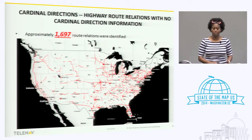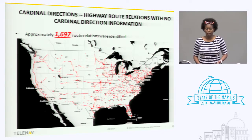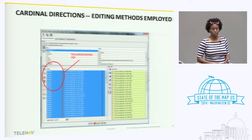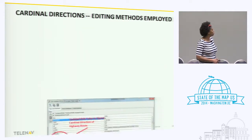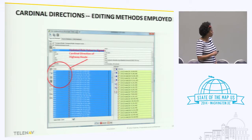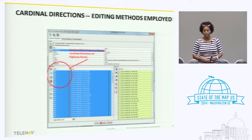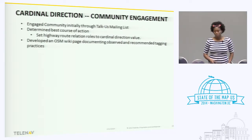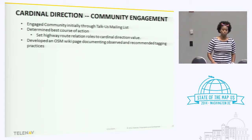We realized from the previous experience that something like this might be a little controversial. So we decided to engage the community in updating the data. This is just an example of updating the member roles of the highway route relation — so it's 'forward.' One of the conventions used to tag highway route relation members is that the cardinal direction says 'east' in the role. So these ways that are members of this I-35 highway route relation represent eastbound I-35. Learning from our past experience, we needed to engage the community, and we did that in multiple ways.